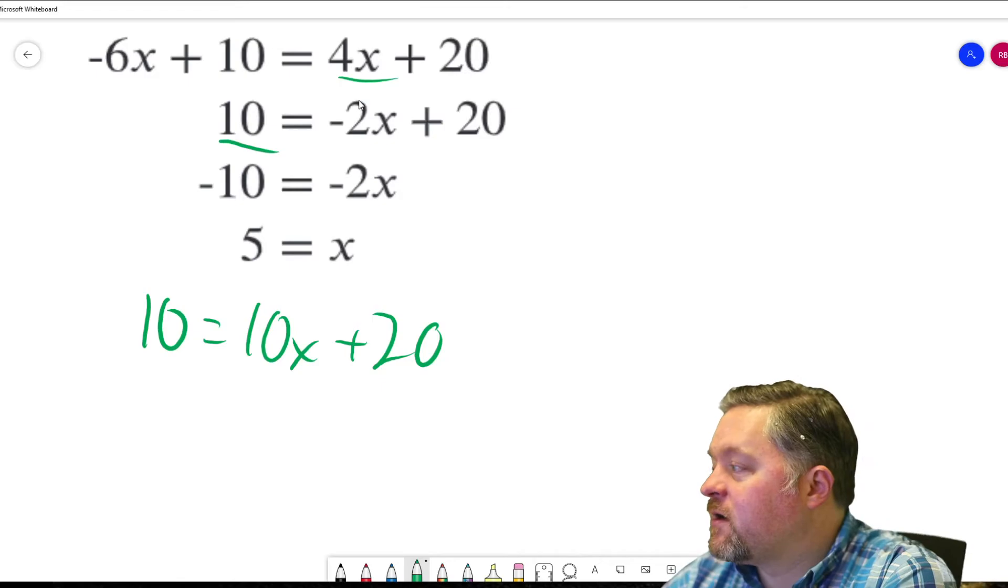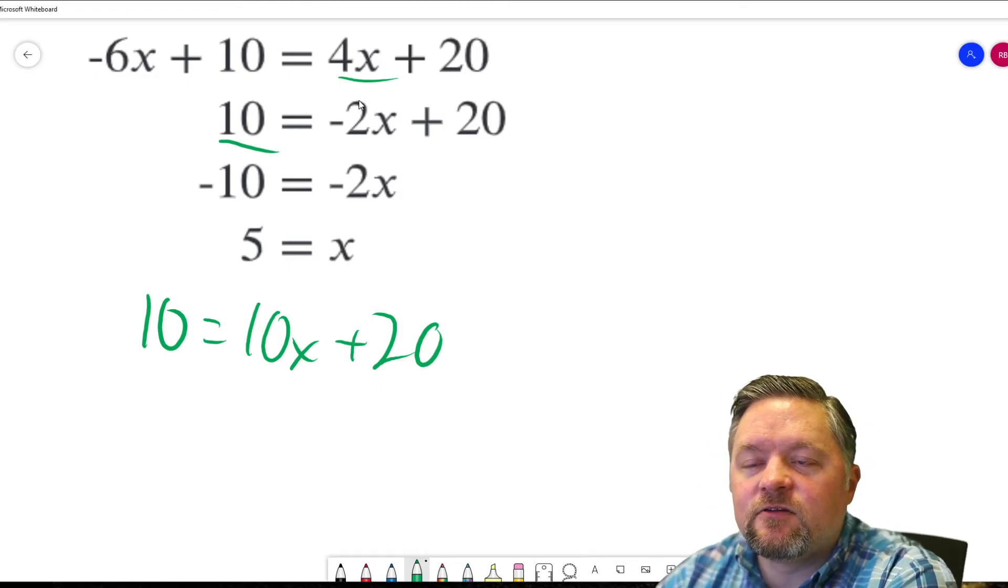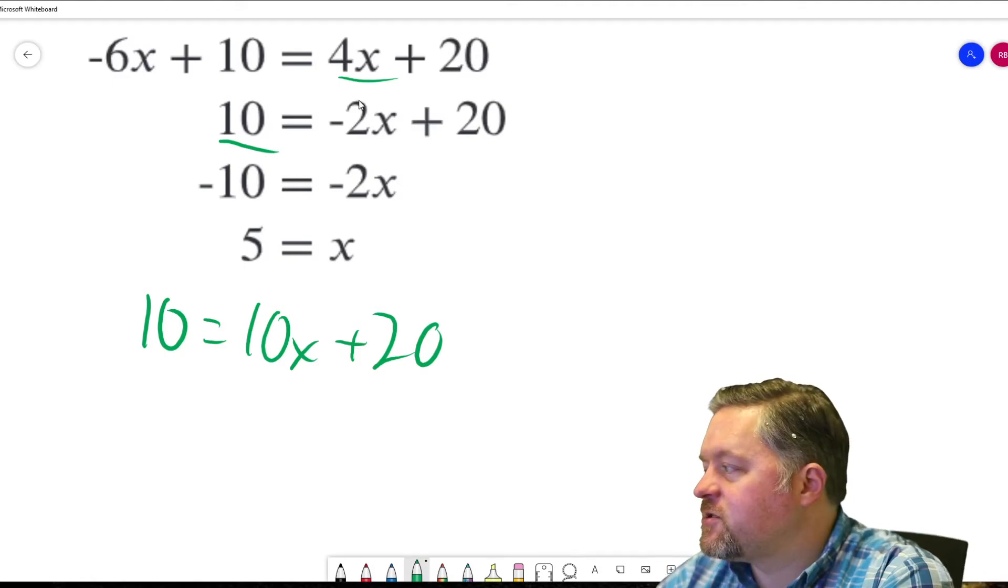So, we should have 10 equals 4x plus 6x is 10x plus 20. Now, what are we going to want to do? The left side is only numbers. The right side has x's and numbers. So, let's get rid of the numbers on the right.